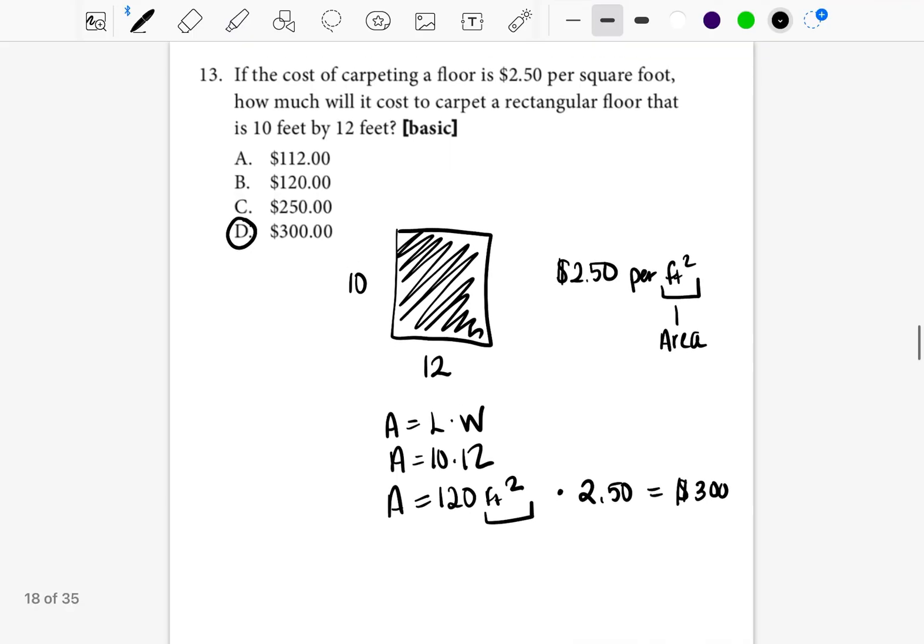So anytime they tell you what type of shape the object is, and they know that you're looking at the square footage, you're usually finding the area of that shape. In this case, it's a rectangle.